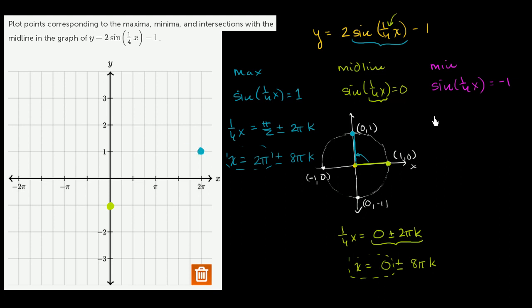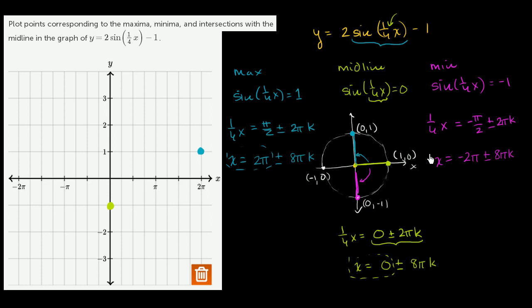For the minimum point, we need 1/4 x to equal negative π/2. So negative π/2 equals negative π/2 plus or minus 2πk. Multiplying both sides by 4 gives x equals negative 2π plus or minus 8πk. The only value on our graph is x equals negative 2π. There, 1/4 x equals negative π/2, sine of negative π/2 is negative 1, so y equals 2 times negative 1 minus 1 equals negative 3. That is our minimum point.